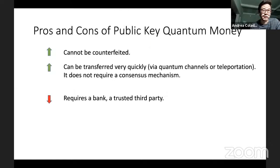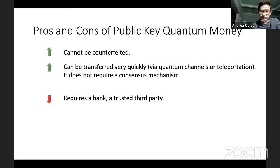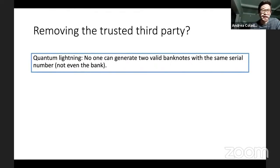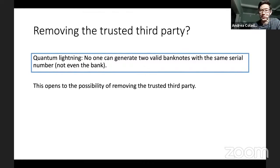Quantum lightning is public key quantum money with an added feature: no generation procedure, not even the honest one, should be able to produce two banknotes with the same serial number except with negligible probability. In a regular public key quantum money scheme, this is certainly not the case, because the bank who creates a banknote can typically create as many copies as it wants. This opens the possibility of removing the trusted third party, because we no longer have to trust the bank not to produce many banknotes with the same serial number.